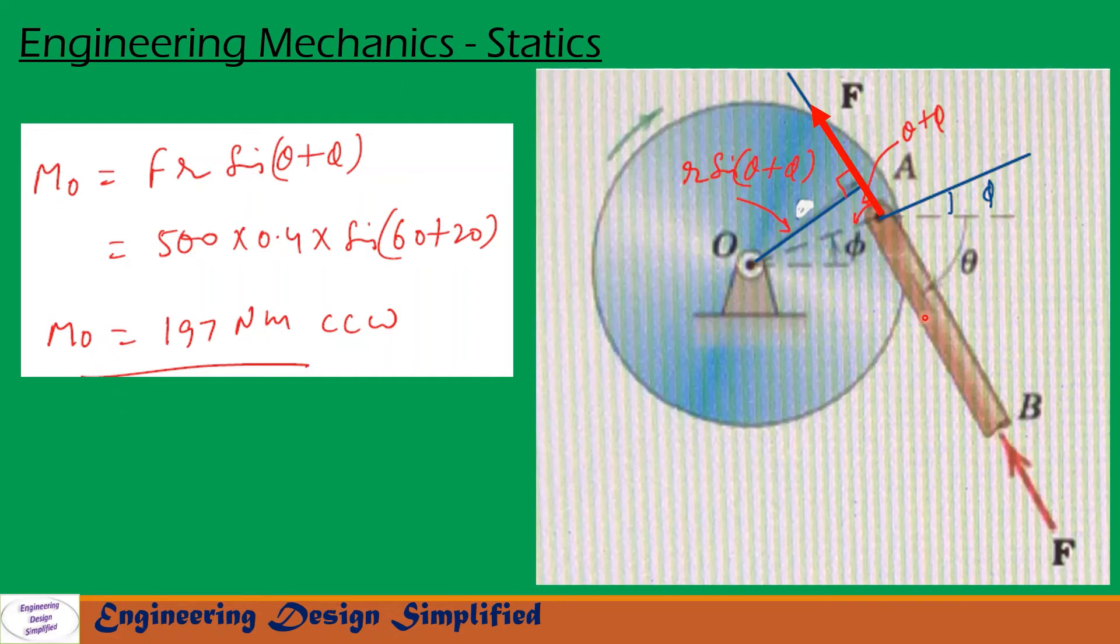The perpendicular distance from O to this force line will be equal to r (the distance OA) times sin(theta + phi). So the moment due to F about O can be written as F into this perpendicular distance. That is Mo = F × r × sin(theta + phi).